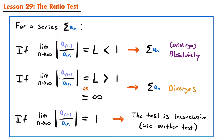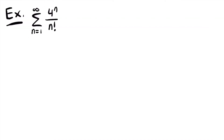Let's look at our first example: the sum from n equals 1 to infinity of 4 to the power of n divided by n factorial. To use the ratio test, we first identify a sub n, which equals 4 to the power of n divided by n factorial — that is the sequence from our series.